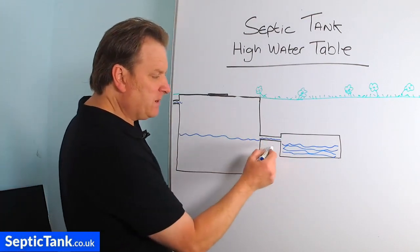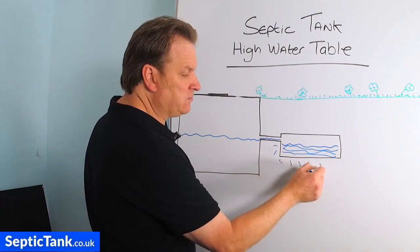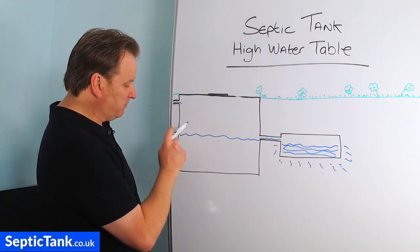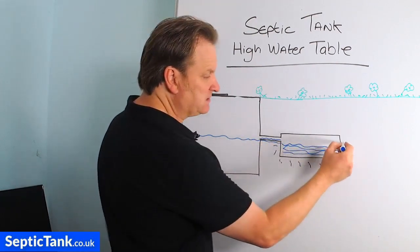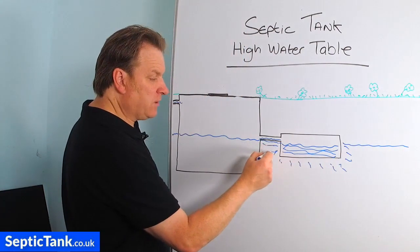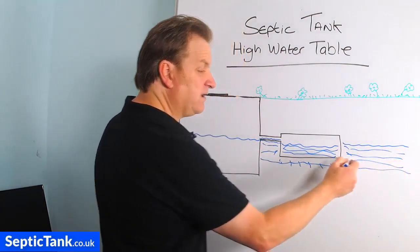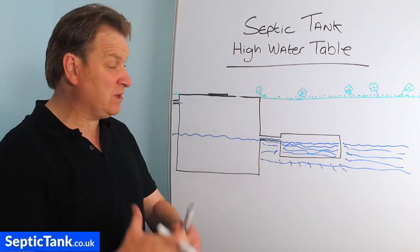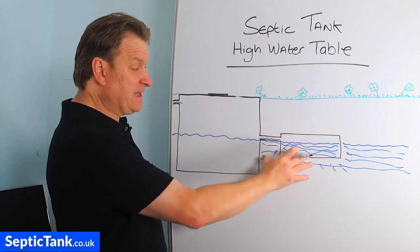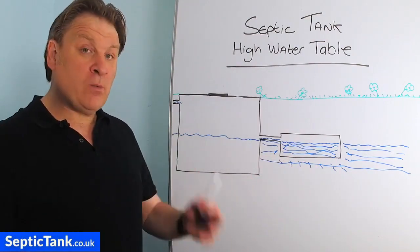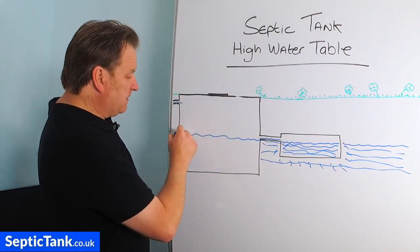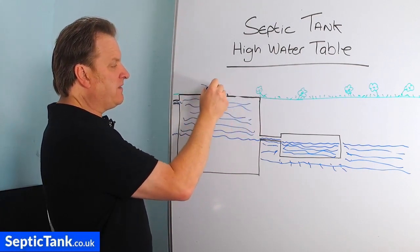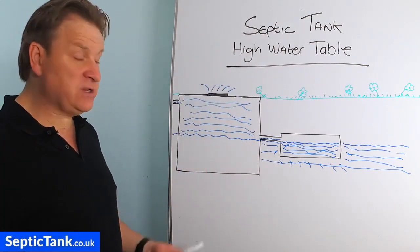Normally the water would just soak away naturally into the soil. But when you've got a high water table — say the water table is the same height as the water in the septic tank — your soak away becomes surrounded by water and can't soak away anymore. The water literally comes out of your septic tank, goes into the soak away, and just stays there. As your house produces more waste water, the levels rise and rise until it reaches the manhole cover and spills out onto your lawn.